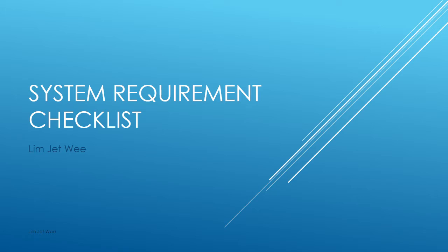We are moving further inside our course and we are now at the system requirements. We need a system requirement checklist to make sure that we don't miss anything. Now, as every system is different, the system requirements will be different, but the basic checklist should cover five areas.